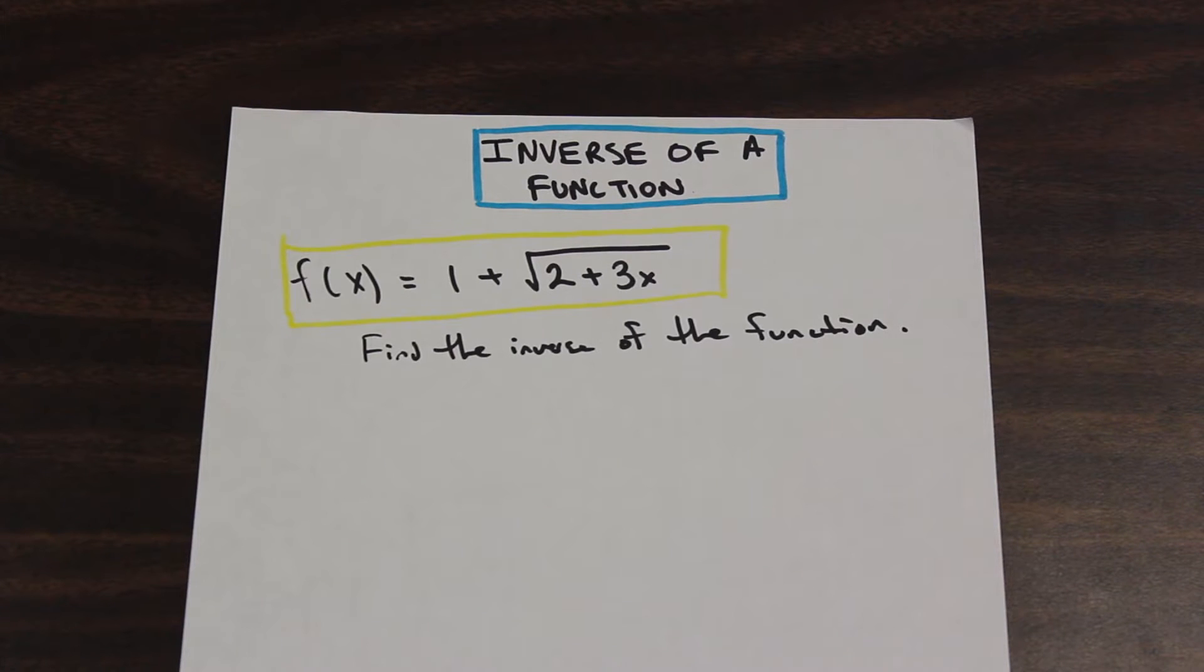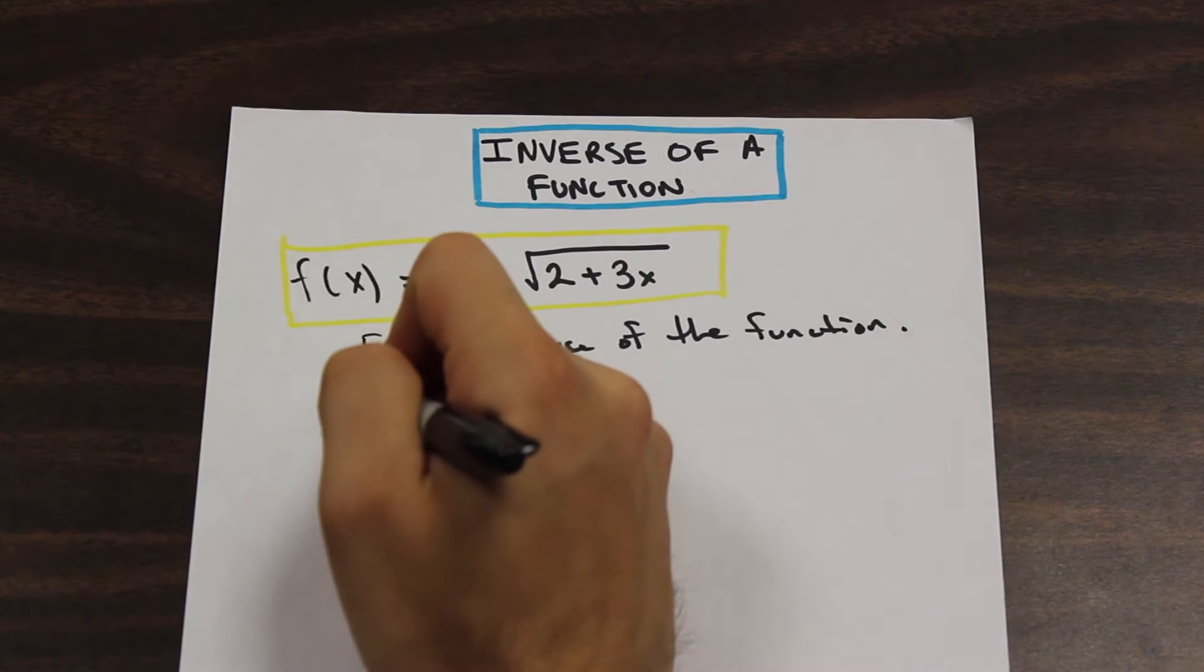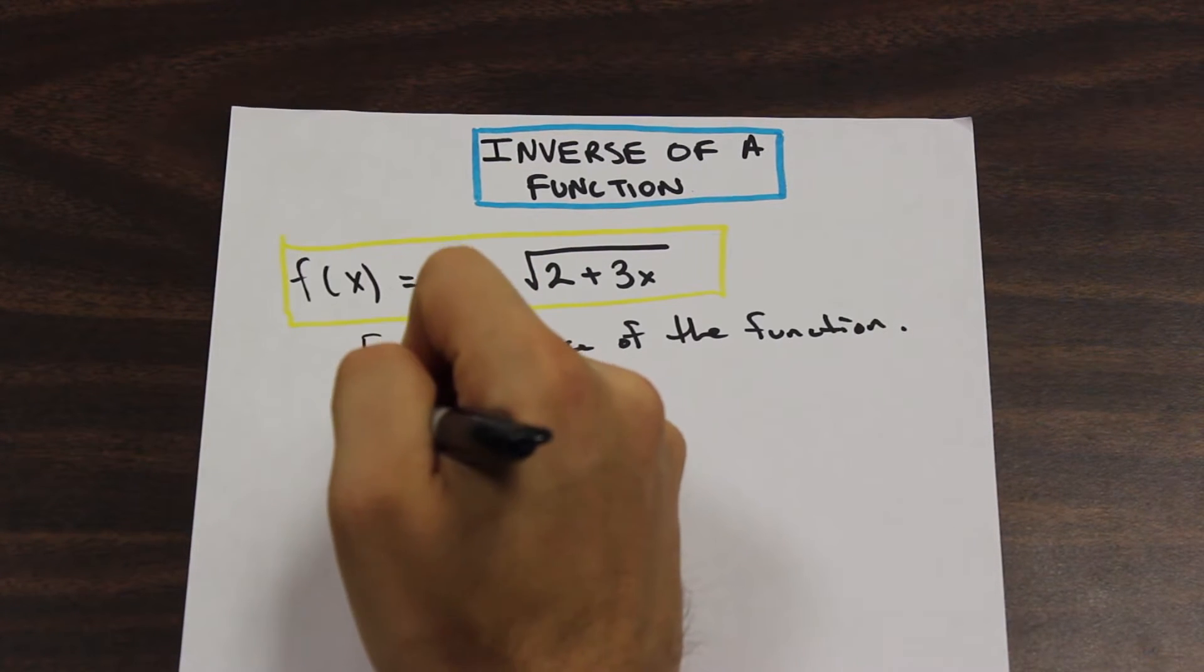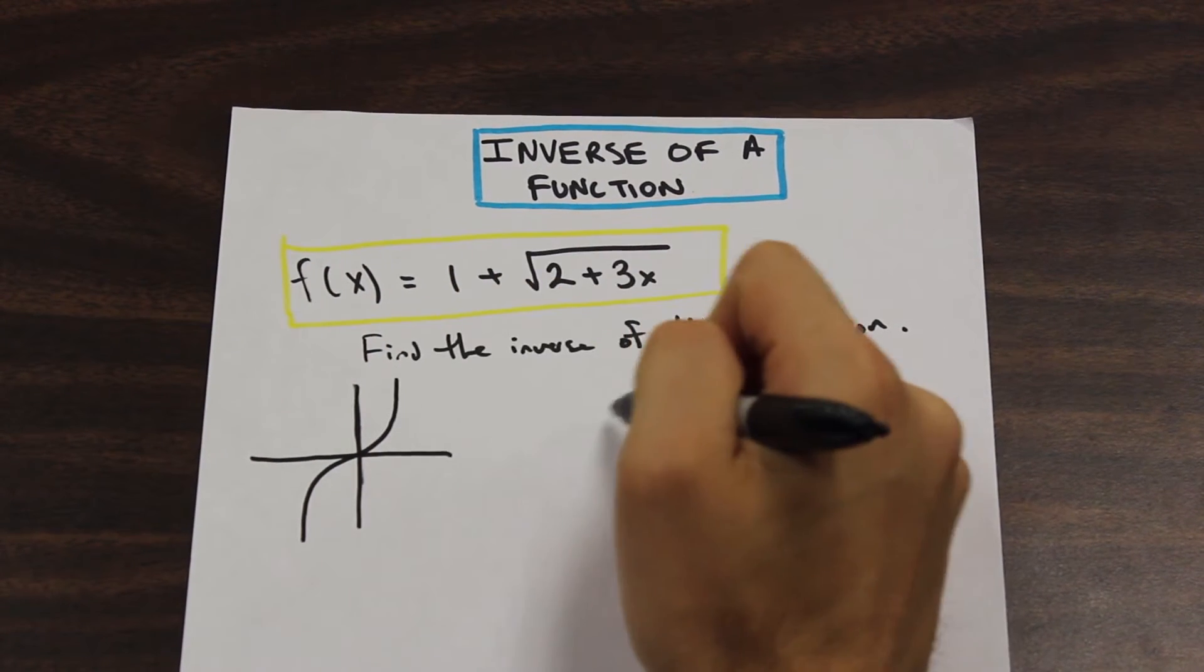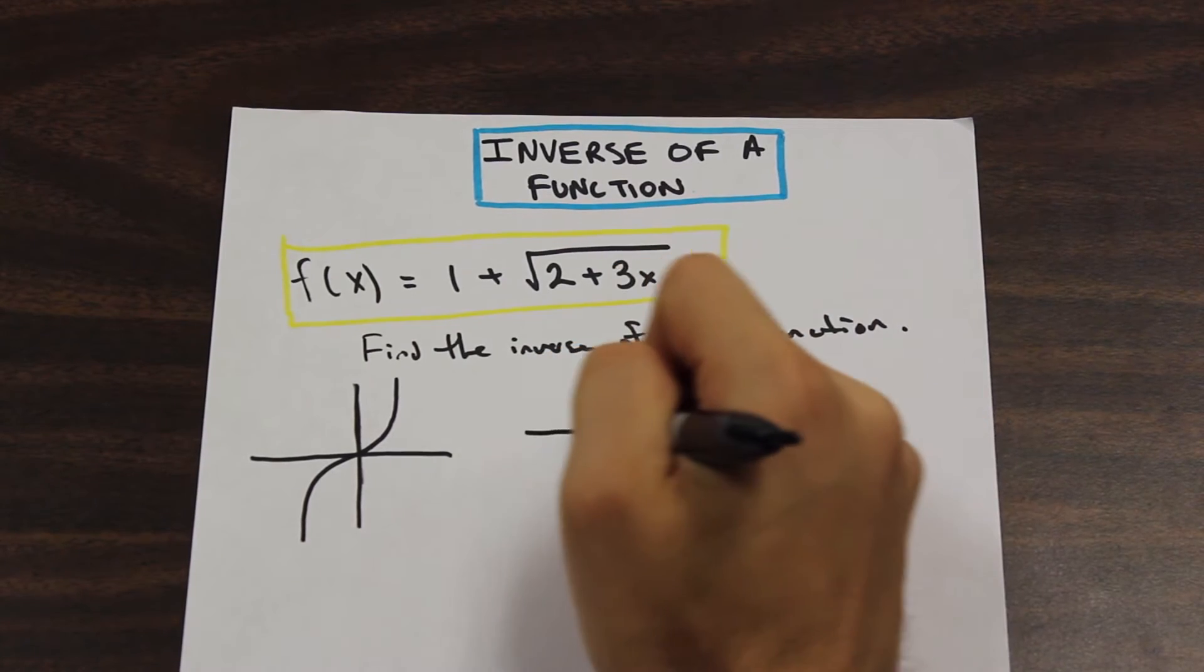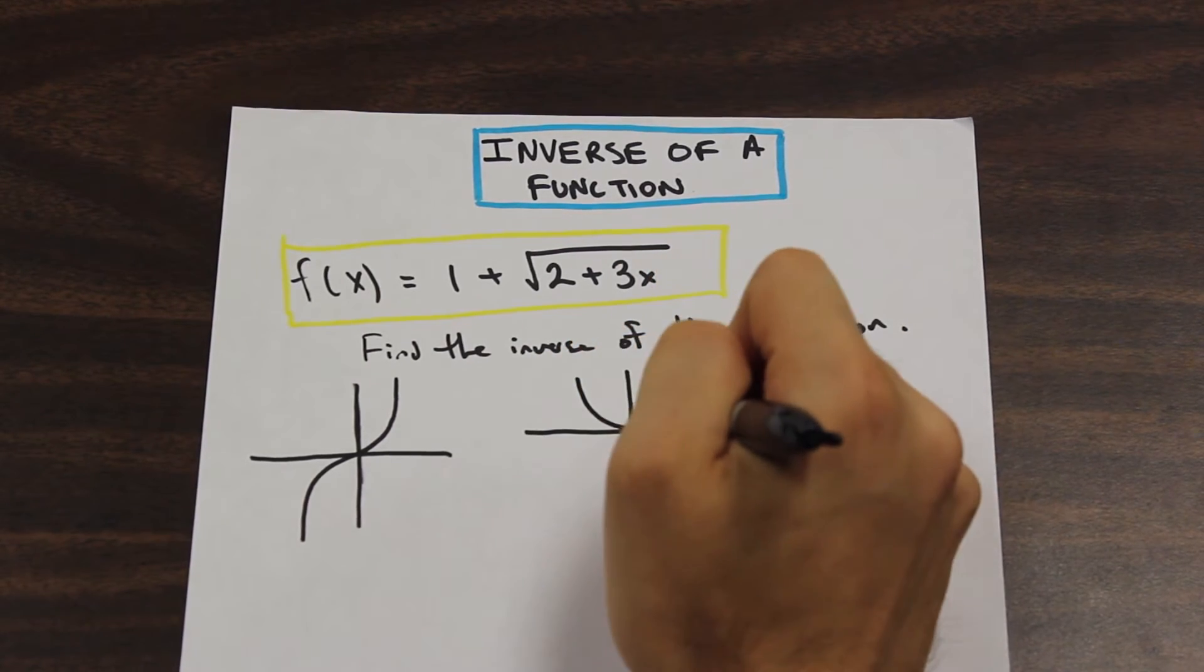For a function to have an inverse, it needs to pass what's called the horizontal line test. And I'm just going to draw two functions here. One that passes the horizontal line test and one that doesn't.